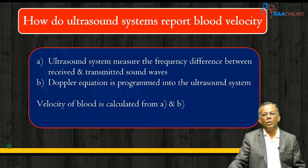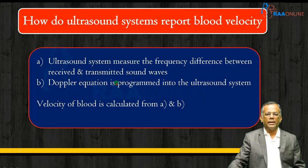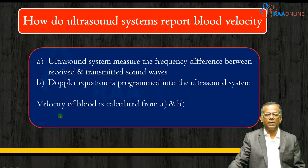An ultrasound system reports blood velocity by measuring the difference between the received and transmitted sound wave frequencies. There is a Doppler equation programmed into the ultrasound system, and the velocity of blood is then calculated from those two inputs.